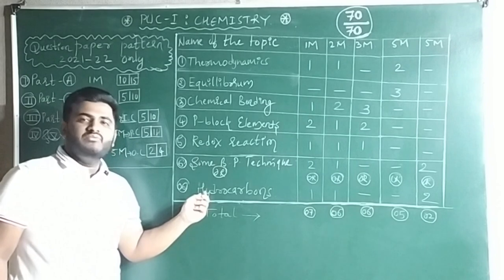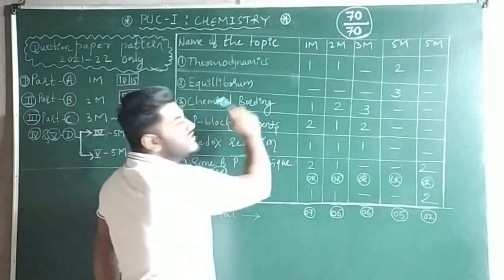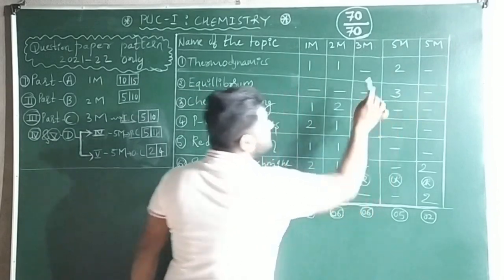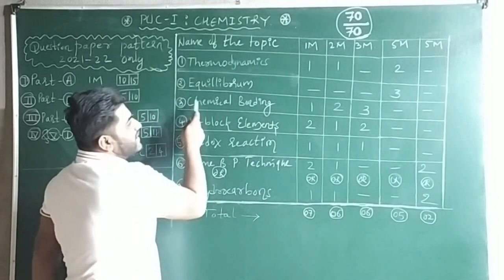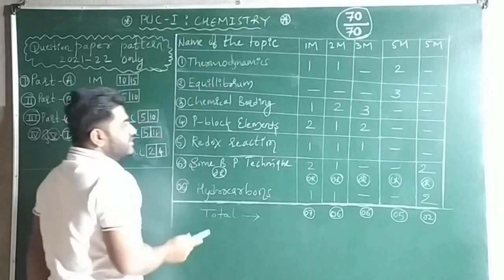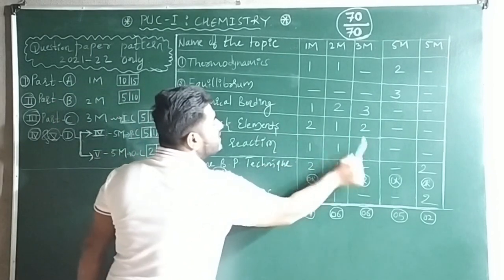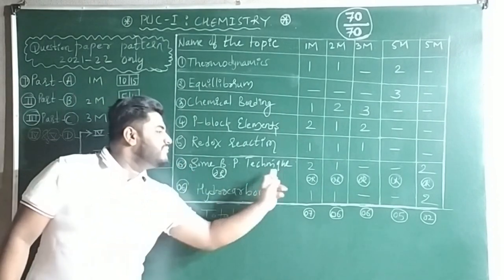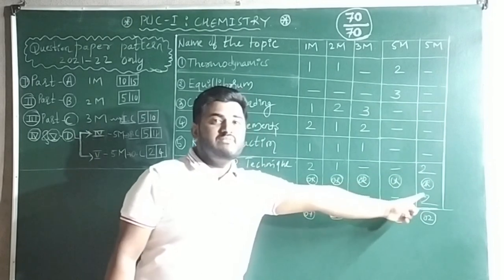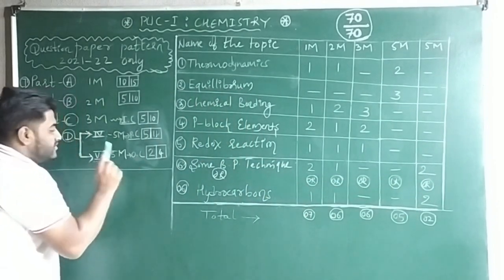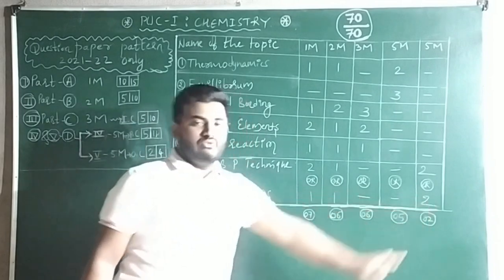Here's the mark-wise breakdown: Thermodynamics gives 1-mark one question, 2-mark one question, and 5-mark two questions. Equilibrium gives three questions in the 5-mark or 3-mark section. Chemical Bonding gives 1-mark one, 2-mark one, 3-mark three. P-Block Elements gives 1-mark two, 2-mark one, 3-mark two. Redox Reactions gives 1-mark one, 2-mark one, 3-mark one. For organic chemistry, both Some Basic Principles and Hydrocarbons each give 1-mark two, 2-mark one, and 5-mark two questions.